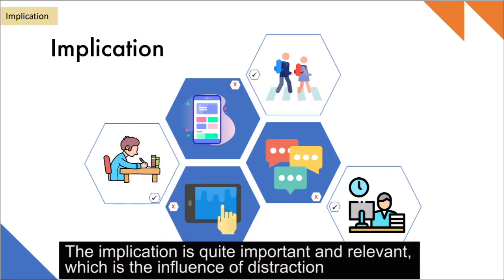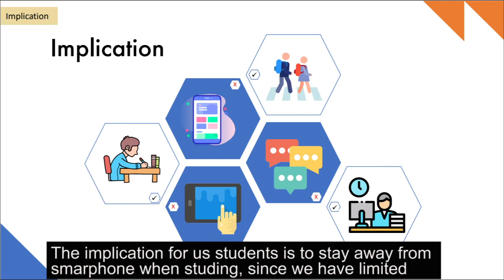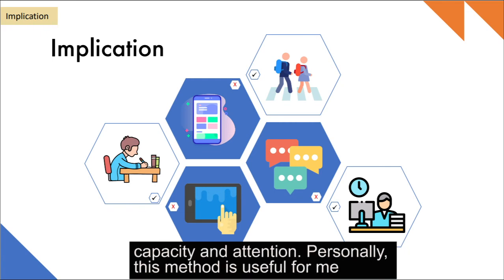The implication is quite important and relevant, which is the influence of distraction. For example, we should not use cell phone when crossing the road or chat with others during working. The implication for us students is to stay away from smartphone when studying, since we have limited cognitive capacity and attention.